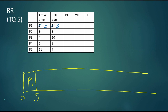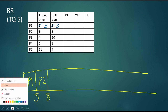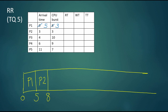The current time is five, and the next one to arrive is P2. P2 happens to have a very short CPU burst, less than the time quantum, so P2 will complete its execution and will be done at time eight.